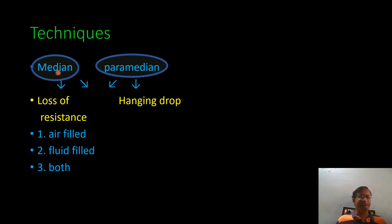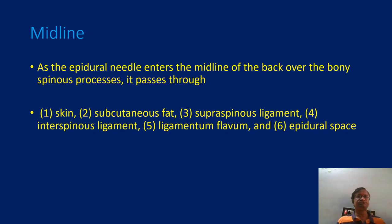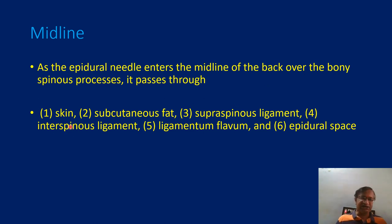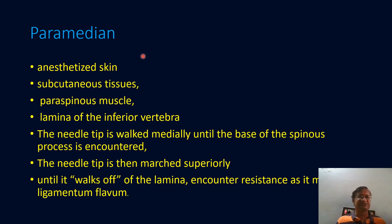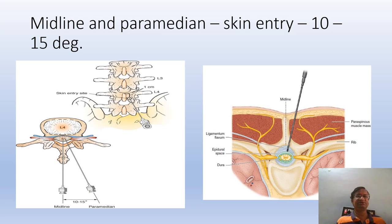Now we have the techniques: median loss of resistance, paramedian hanging drop loss of resistance, and these can be air-filled, fluid-filled, or both. As the epidural needle enters midline, it passes through skin, subcutaneous fat, supraspinous ligament, and interspinous ligament. For the paramedian approach, we go through skin, subcutaneous tissue, paraspinous muscle, and walk off the lamina into the epidural space. Midline versus paramedian — the paramedian may be 10 to 15 degrees lateral.